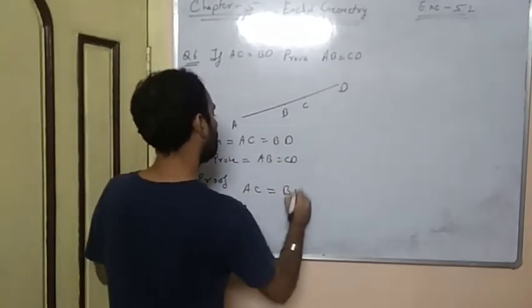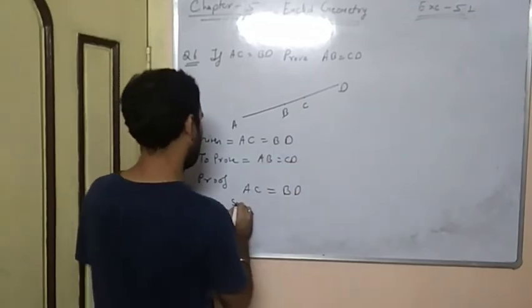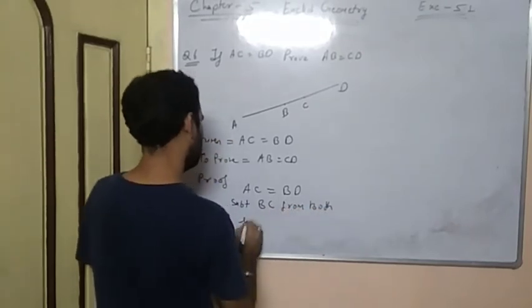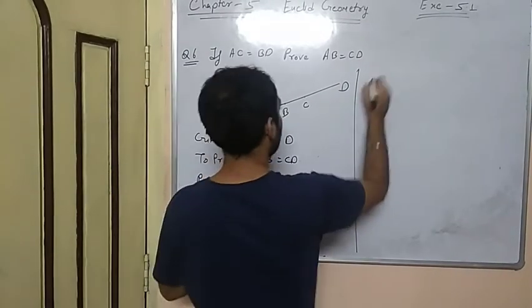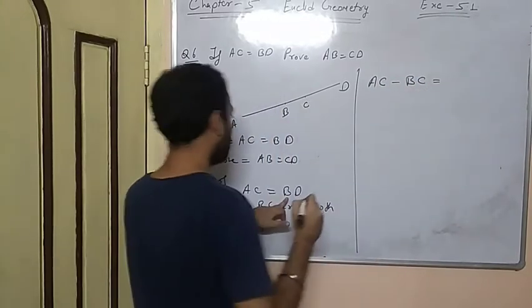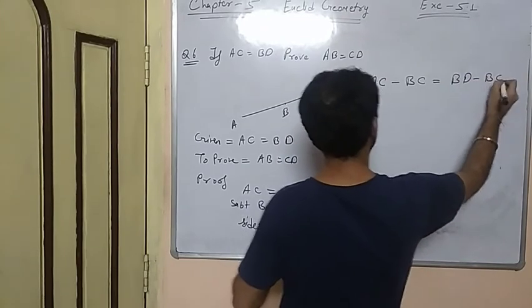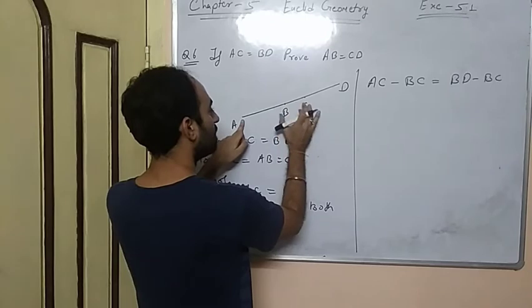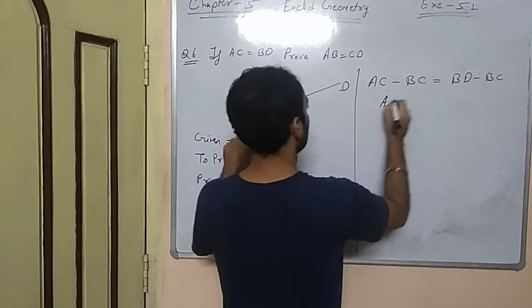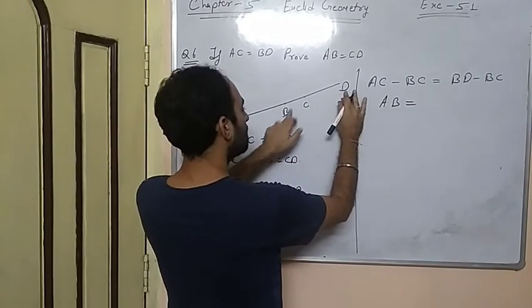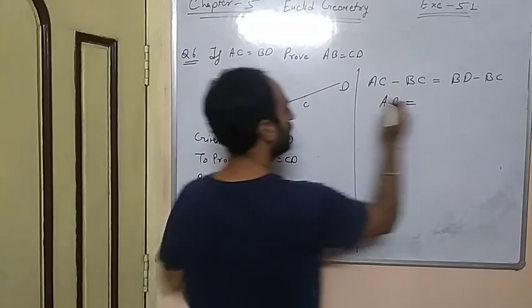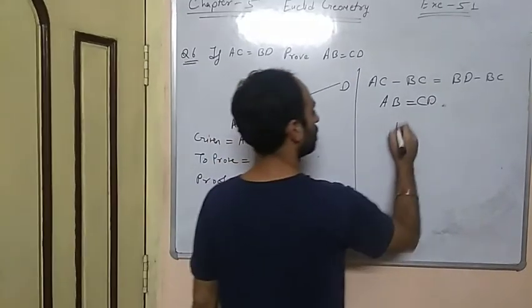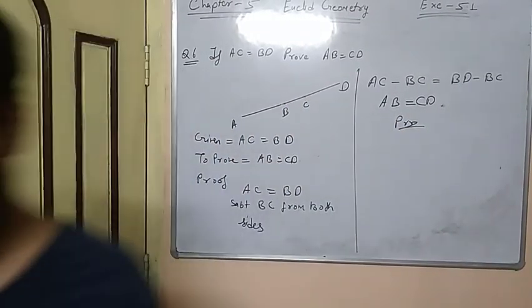AC is equal to BD. Subtract BC from both sides, so it will be AC minus BC equals to BD minus BC. Now AC minus BC is AB, and BD minus BC is CD. So this becomes AB equals to CD. Hence proved.